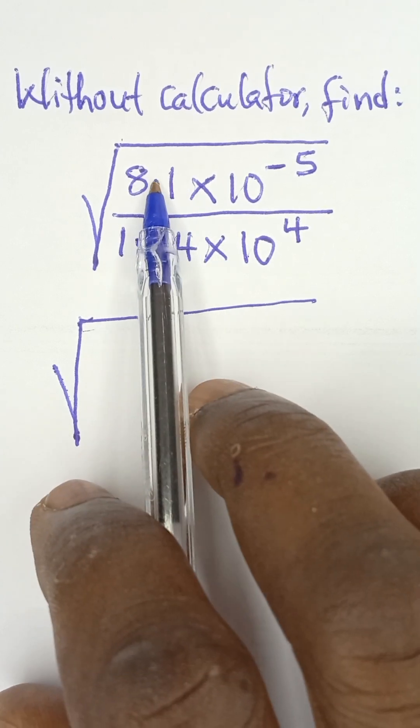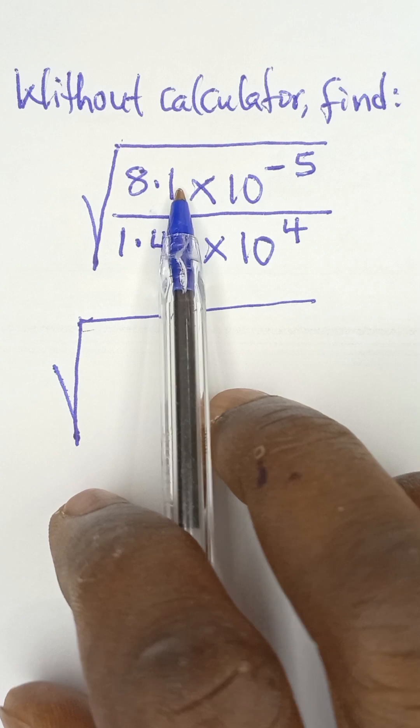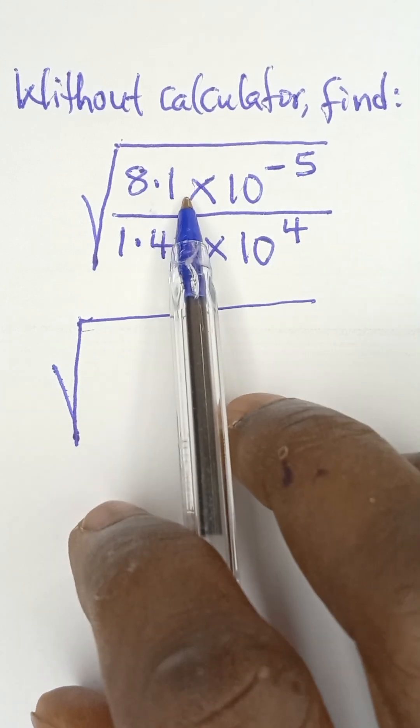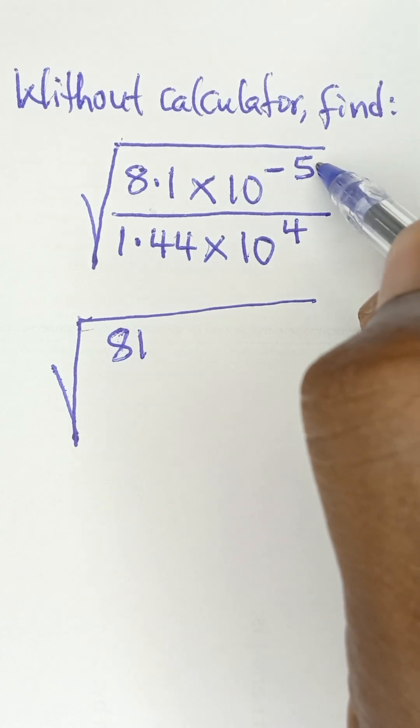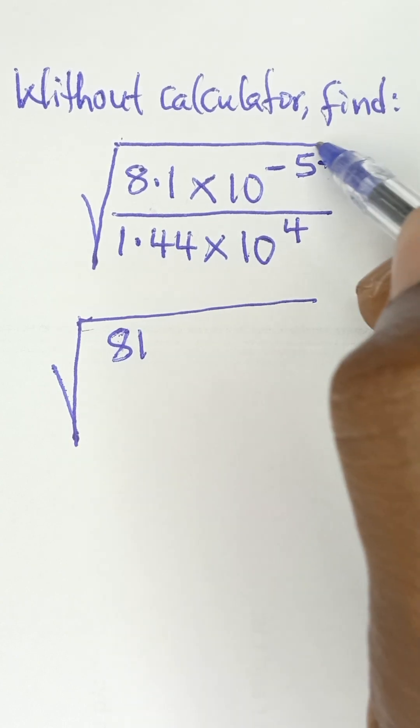For us to make this 81, we move the decimal point once to the right. When we move the decimal point once to the right so that it becomes 81, what we do to this is subtract 1 from the power.